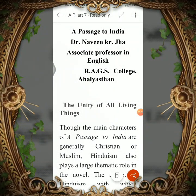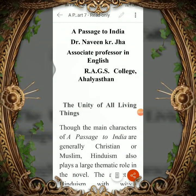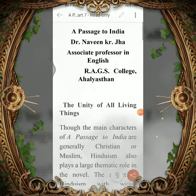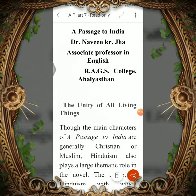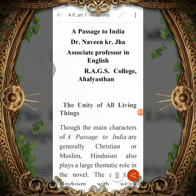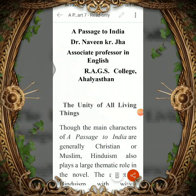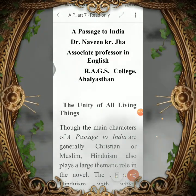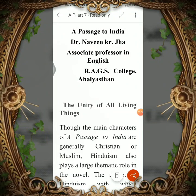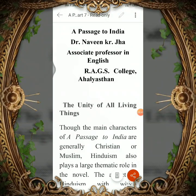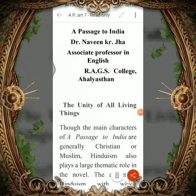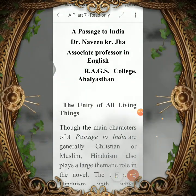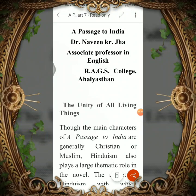Dear students, this time we have the topic entitled 'The Unity of All Living Things.' In context with the novel A Passage to India by E.M. Forster, we have discussed several aspects of this novel and come to know that it explores the possibility of friendship between the subjects and the rulers in the British Raj. We have concluded that at that time, friendship between the British and Indians was not possible, because they were deeply divided on racial grounds.